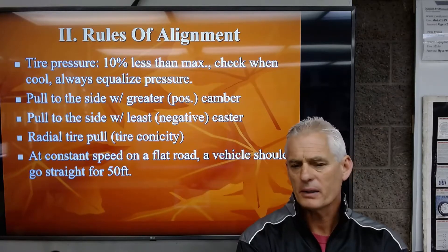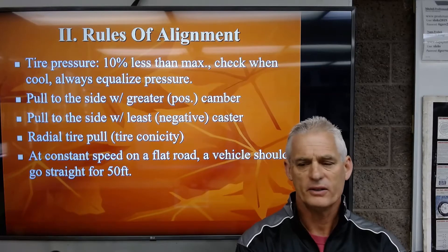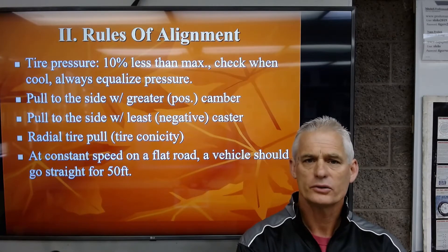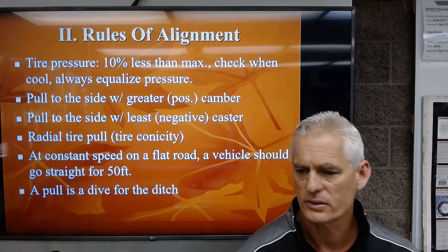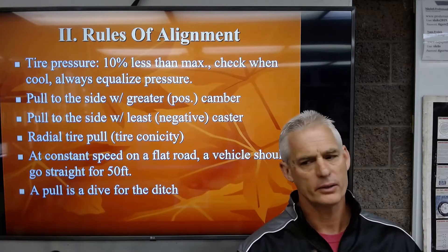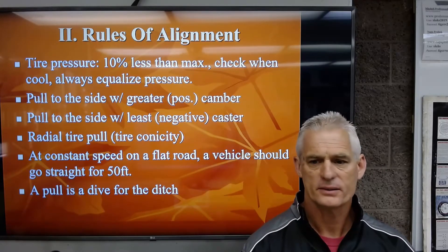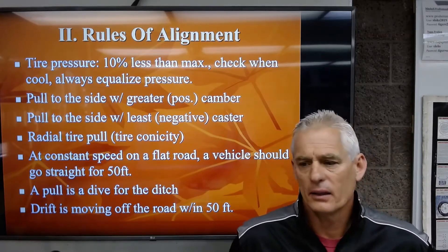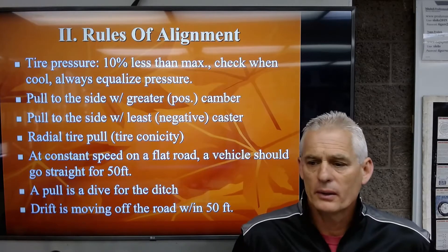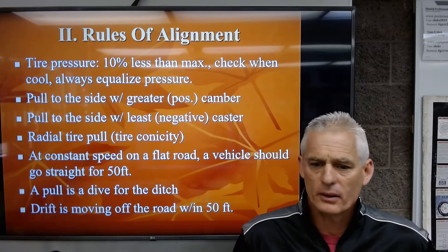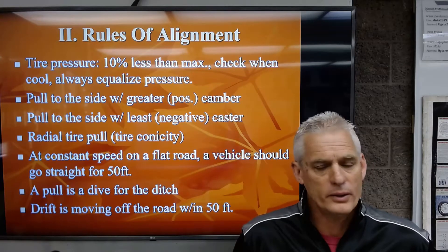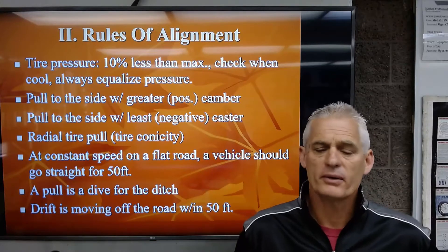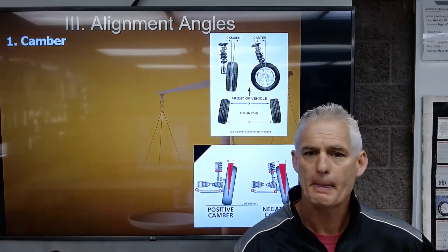At approximately 35 miles per hour on a flat road with slight road crown, a vehicle should go straight for 50 feet. A pull is a hard dive toward the ditch when you release the wheel. A drift is moving off the road within 50 feet. Environmental factors like wind can also cause drift, so take those into account.